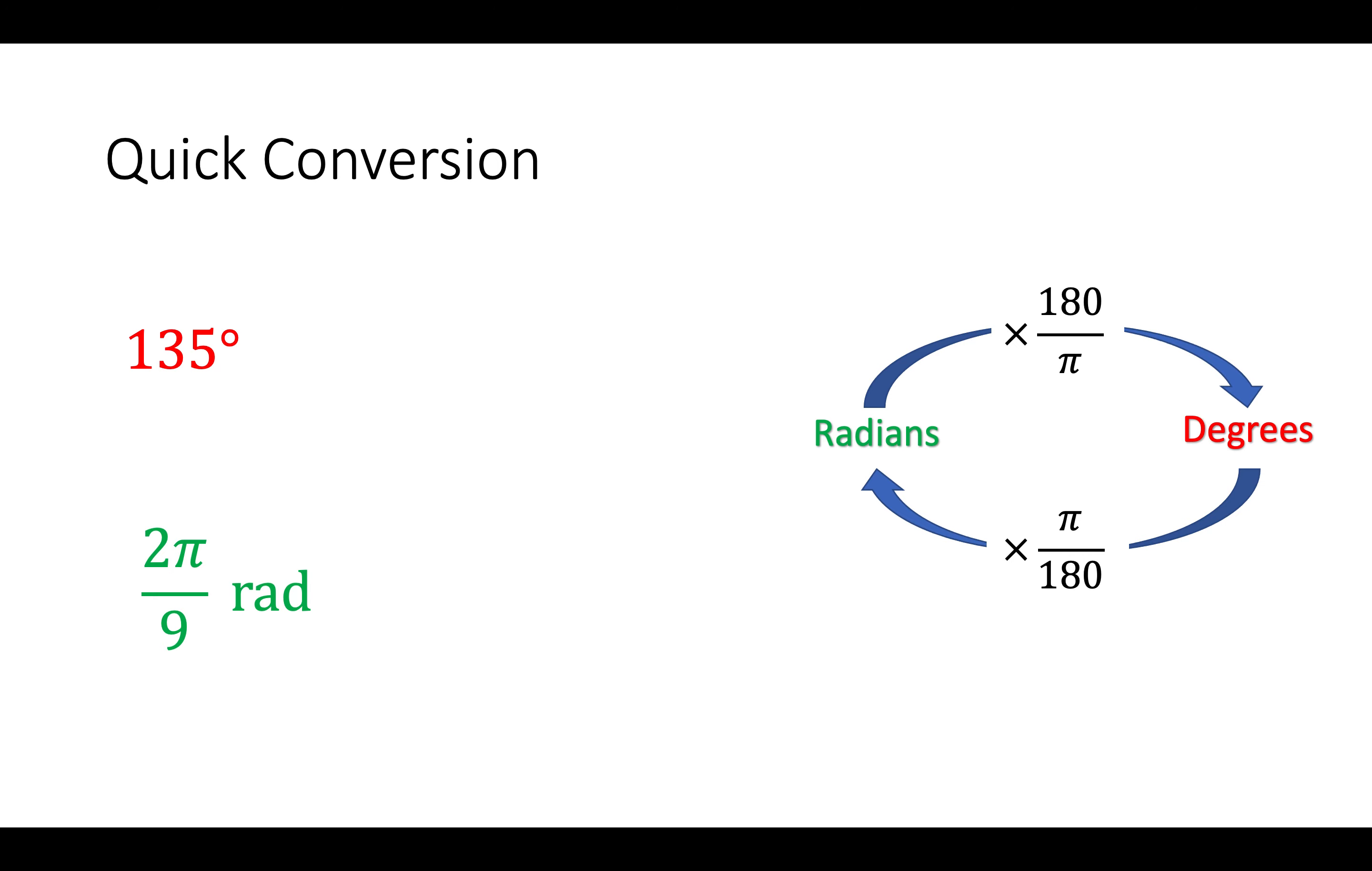So let's see this in action. 135 degrees. Well, to make that into radians I'm going to times by π over 180, and if you type it into the calculator I get 3π over 4 radians.